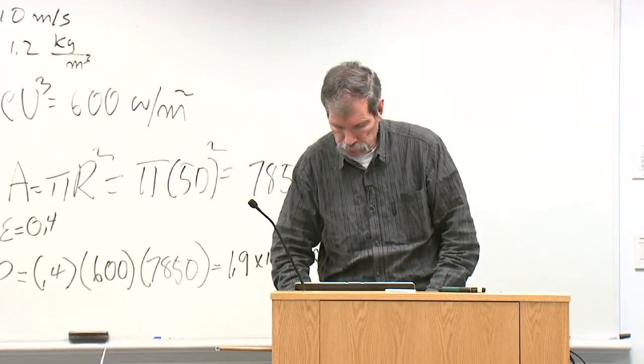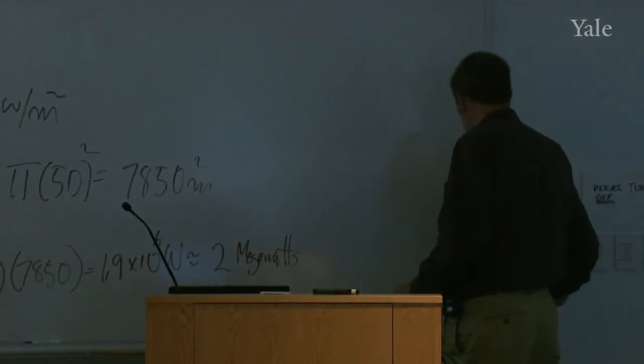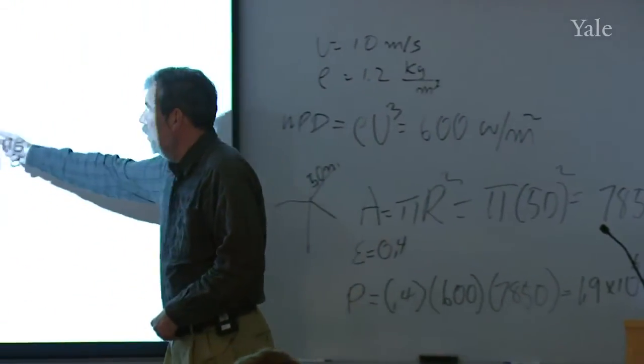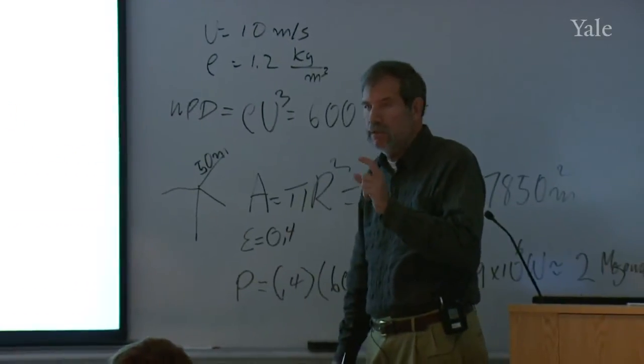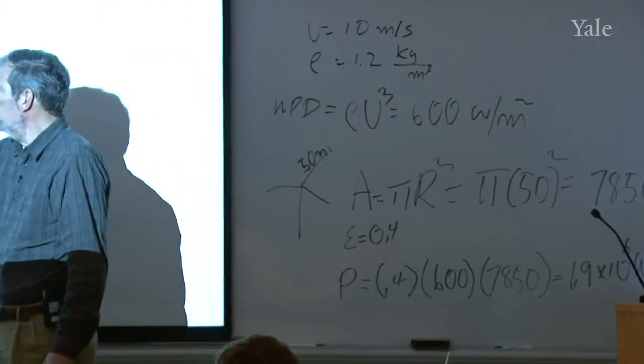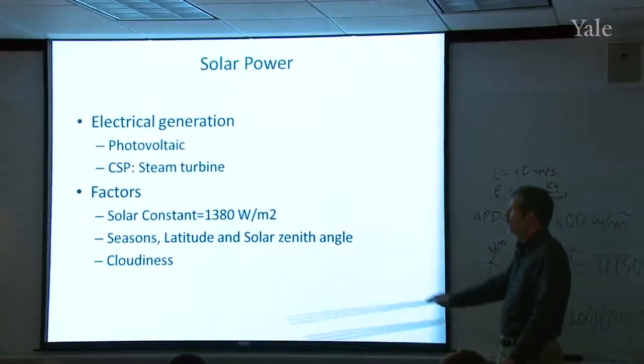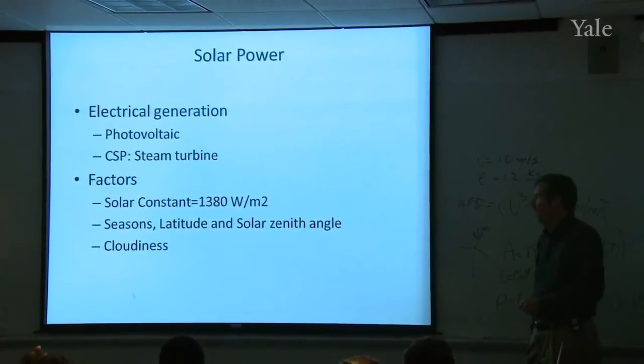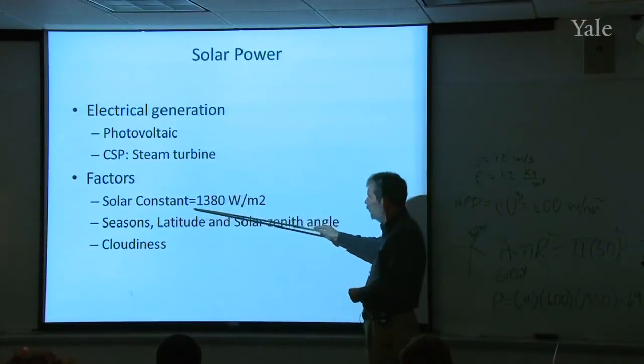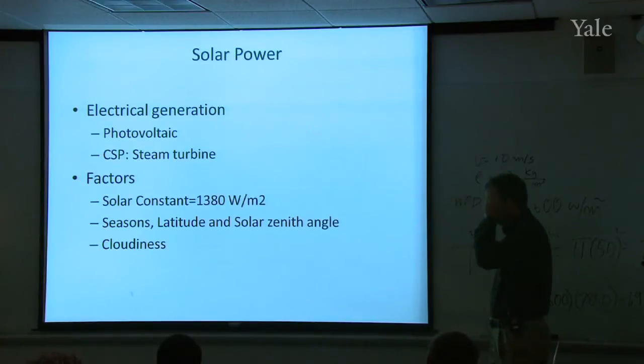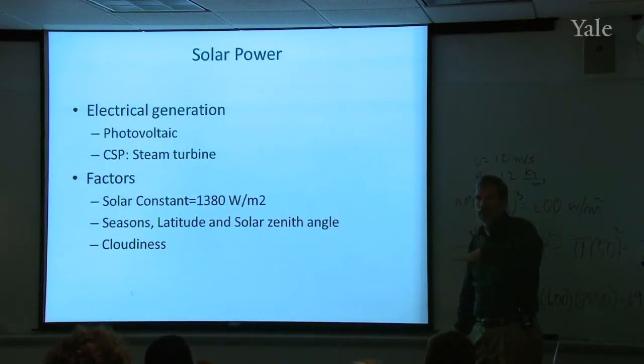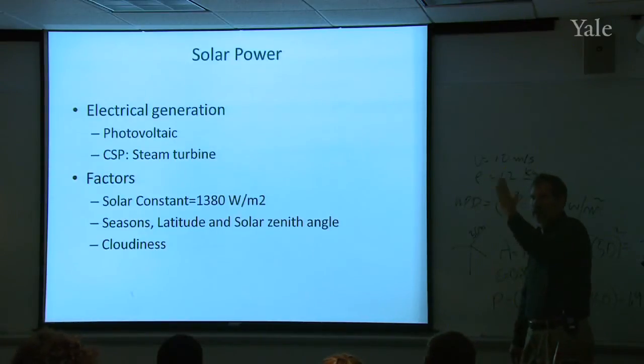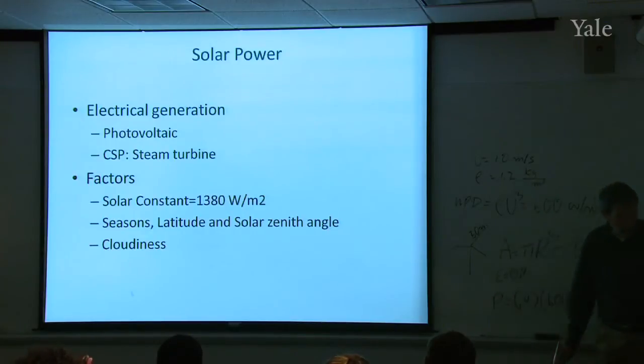Solar. There's two basic types of electrical generation from solar power. One is photovoltaic, abbreviated PV, and the other is concentrated solar power, abbreviated CSP. This is a direct generation of electricity. In this case, you make steam and you put it through a turbine, and you generate electricity that way. The things you have to consider to understand solar power: the solar constant, I've just put it on the board. The cloudiness, how much comes through and reaches the surface of the Earth where your solar power system is located. And then the seasons, the latitude, and this all important solar zenith angle.